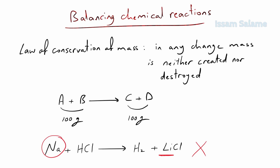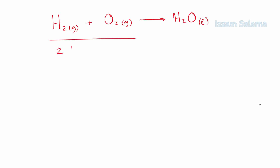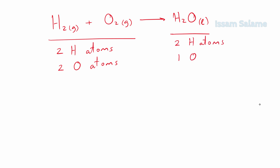This brings us to our lesson: how to balance the number of atoms on both sides of a chemical reaction. For example, the reaction between hydrogen gas and oxygen gas to produce water in liquid state. On the left side we have two atoms of hydrogen and two atoms of oxygen, while on the right side we have two atoms of hydrogen and only one oxygen atom. So the hydrogen atoms are balanced, but the oxygens are not.